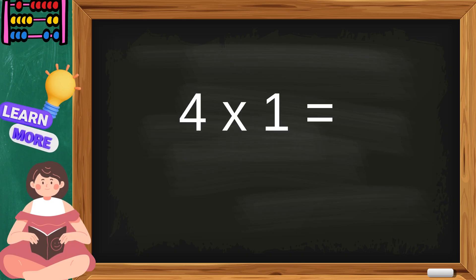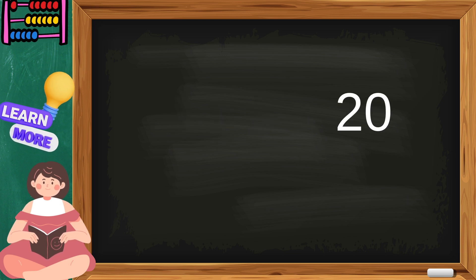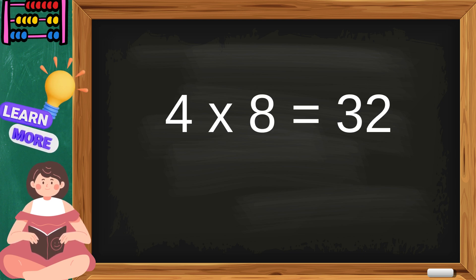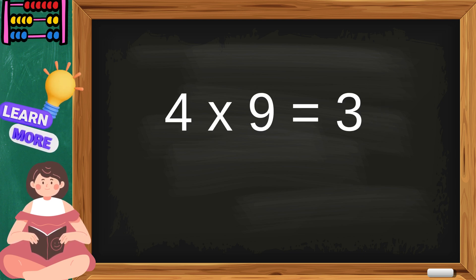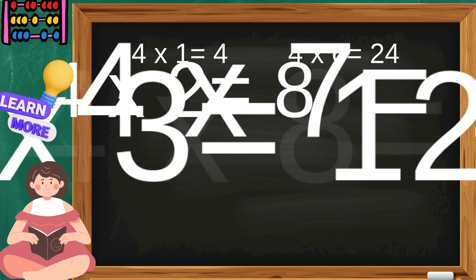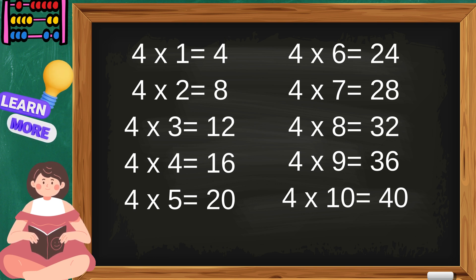Four ones are four, four twos are eight, four threes are twelve, four fours are sixteen, four fives are twenty, four sixes are twenty-four, four sevens are twenty-eight, four eights are thirty-two, four nines are thirty-six, four tens are forty. Sing with me children, the table of four.